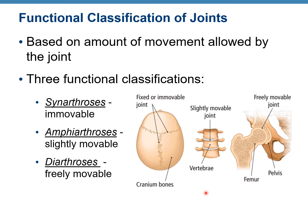Based on the amount of movement allowed by the joint, joints can be classified into three functional groups. When we classify them based on the amount of movement, we call them immovable or synarthrosis, slightly movable — amphiarthrosis — and freely movable — diarthrosis.